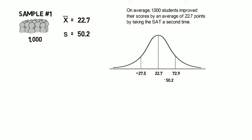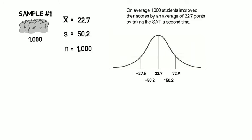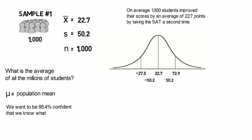And on the lower end, they actually did worse. Lost 27.5 on their score for our 1,000 students. But the average was 22.7 higher. What's the average of the million students, given this information? What we want to do is say, with 95.4% confidence, we know what μ is based on this sample of 1,000 students.